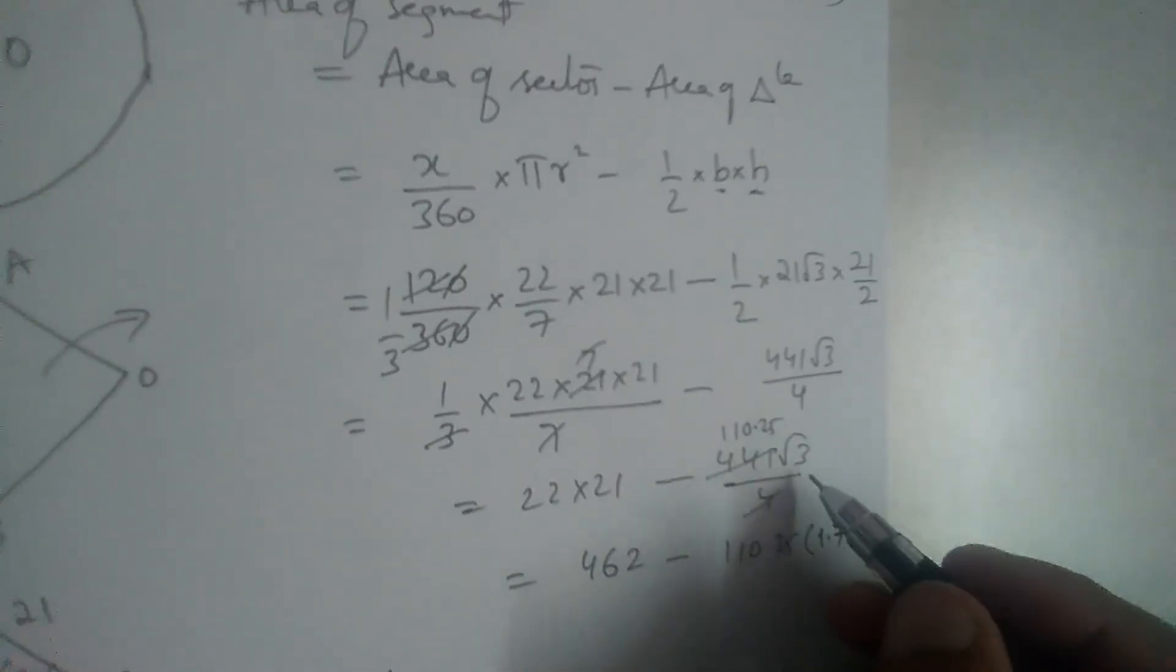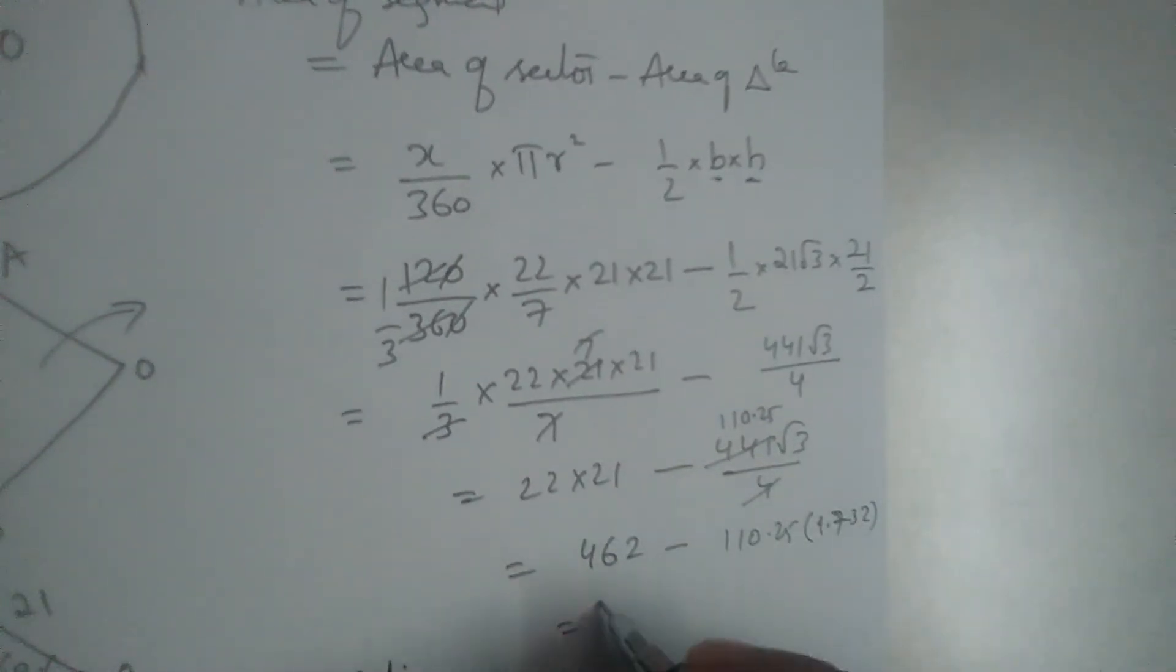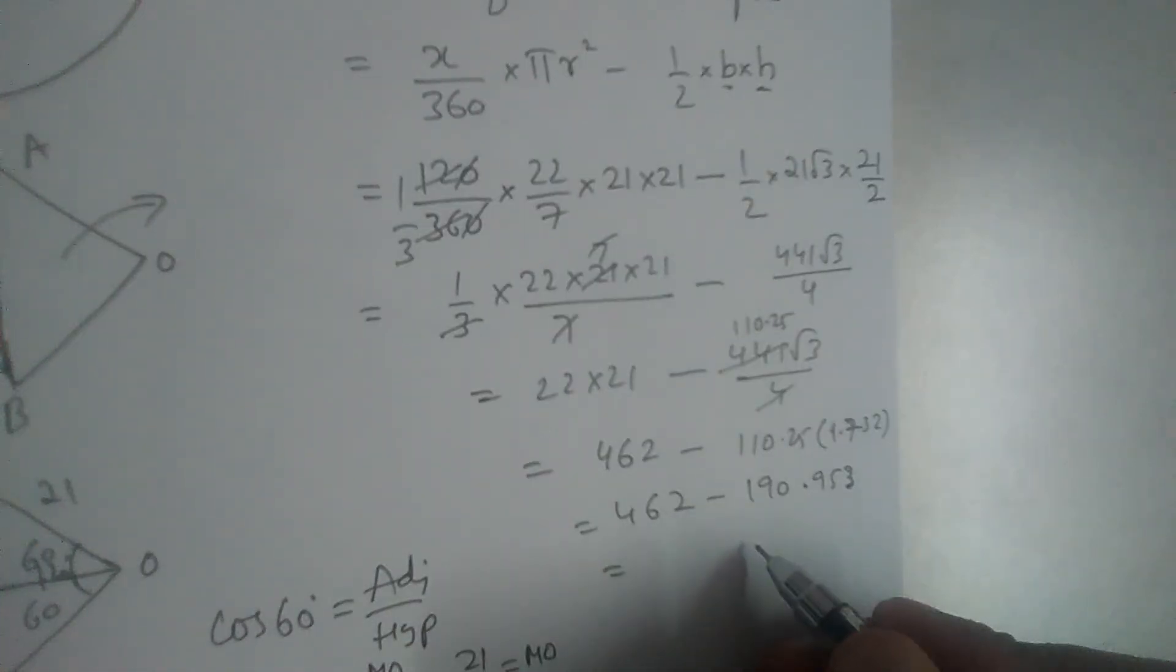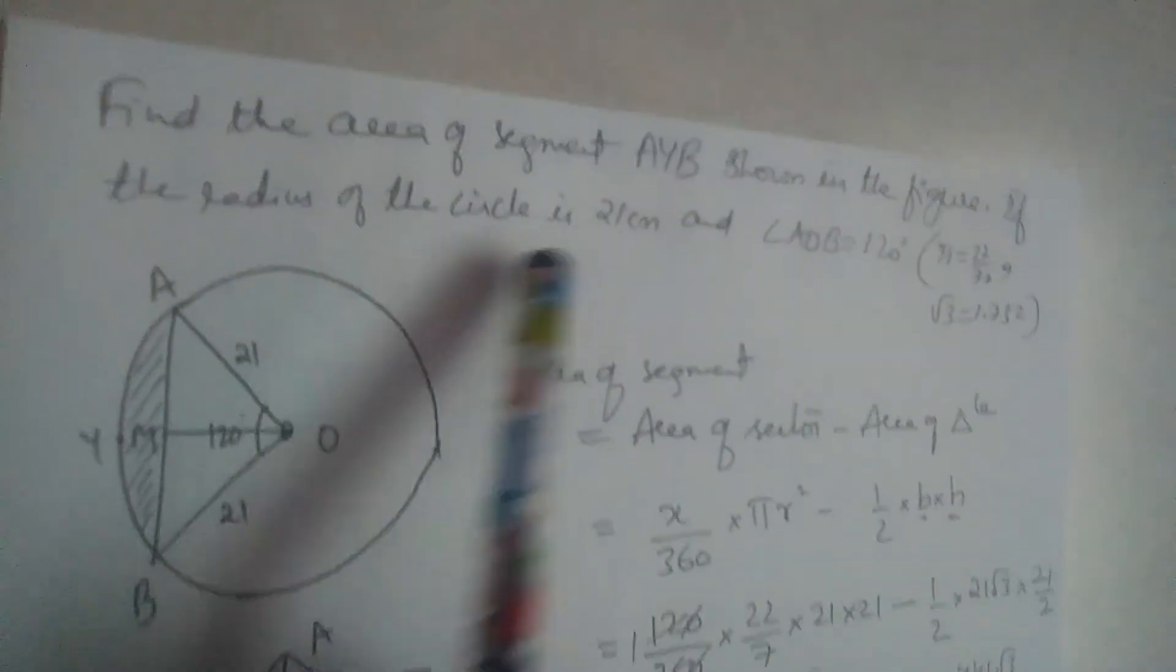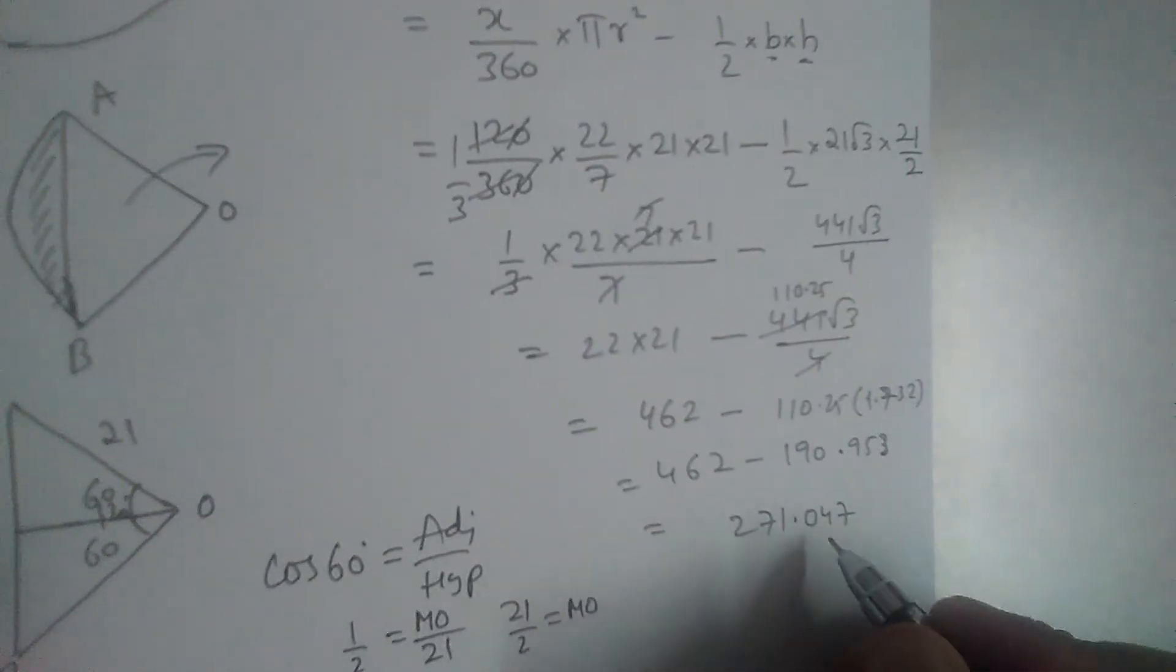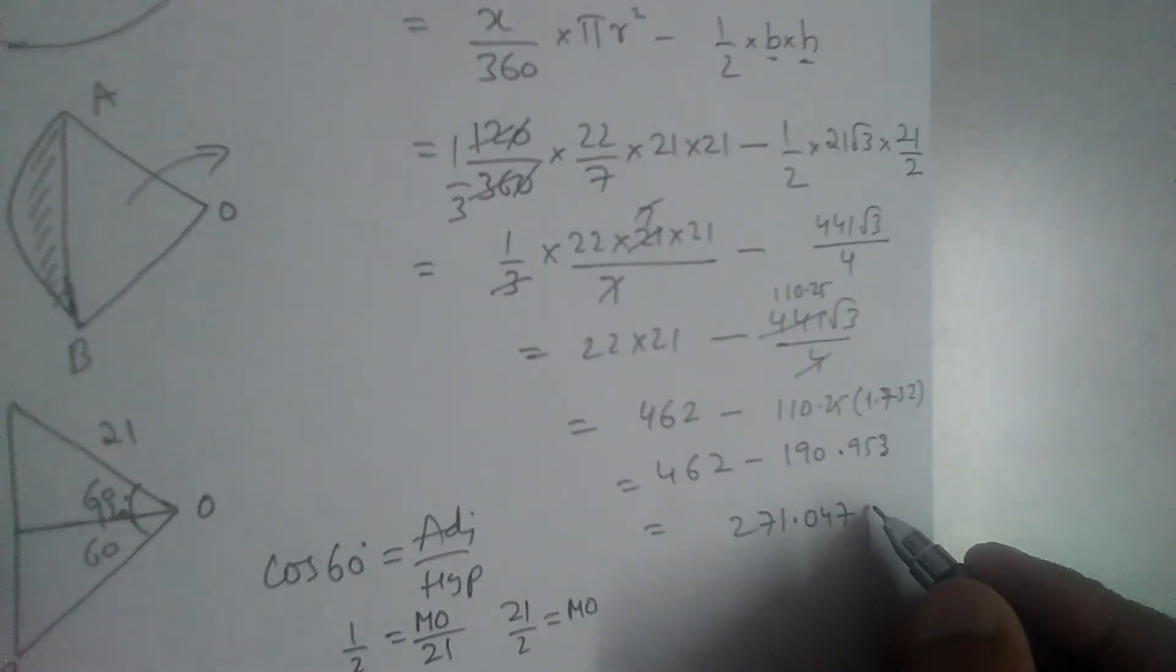Because he asked us to take root 3 as 1.732. So 462 minus 190.953, you multiply this, you will get 190.953. So 462 minus 190.953 will give us 271.047. So what is the area of the shaded region, area of the segment AYB, 271.047 centimeter square.